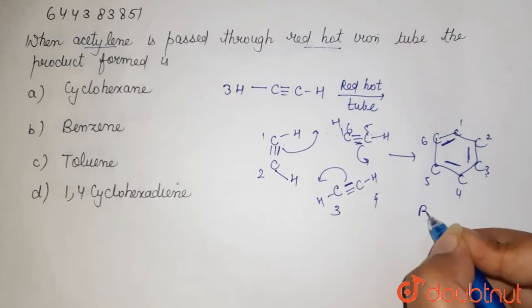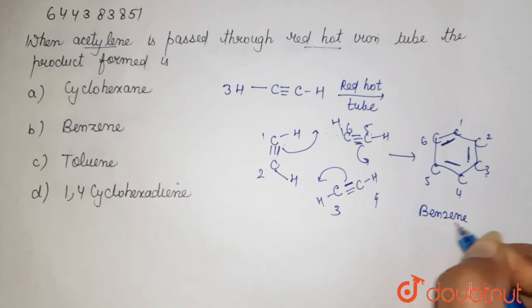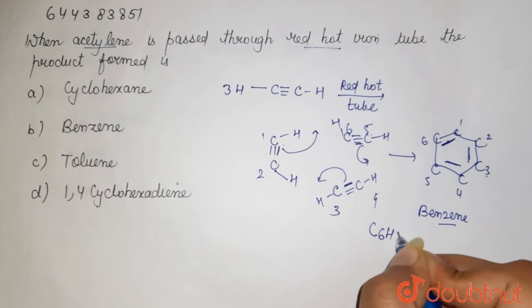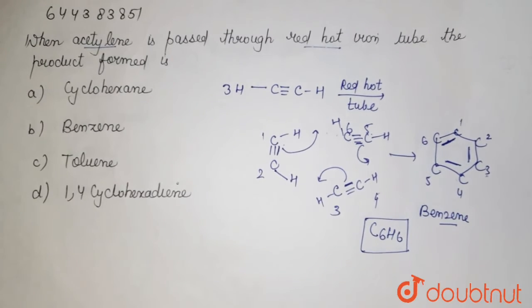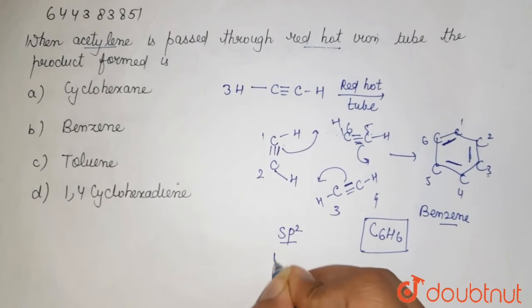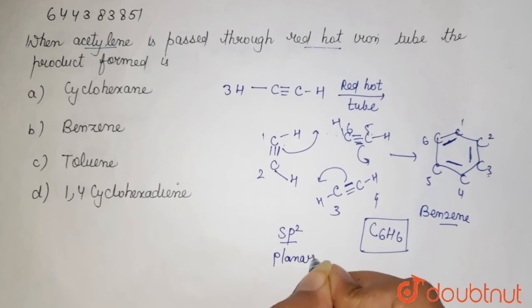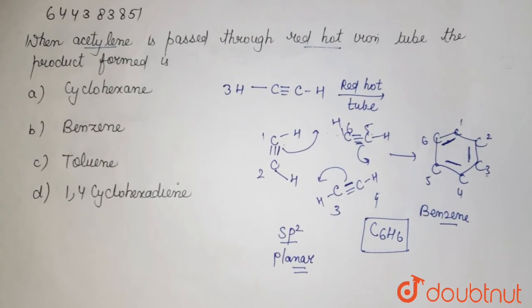So this which is formed is known as your benzene. It is C₆H₆. It has alternating double bonds which shows the sp² hybridization, and it is a planar structure. So when you treat your acetylene in the presence of red hot tube, you will get the benzene.